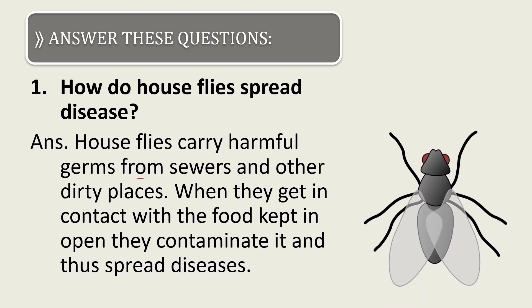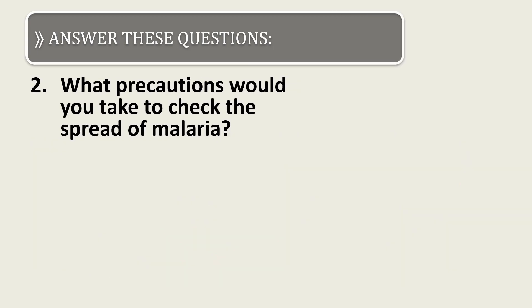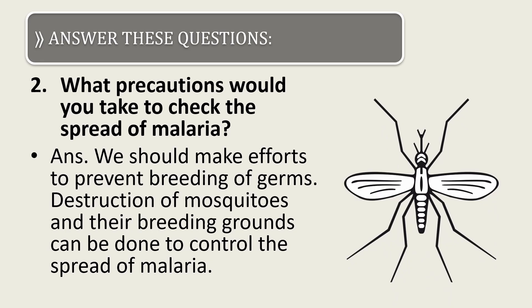Now the long answer questions. How do house flies spread disease? House flies carry harmful germs from sewers and dirty places. When they come in contact with food kept in the open, they contaminate it and thus spread diseases.